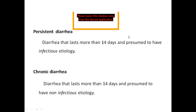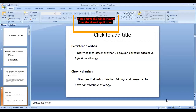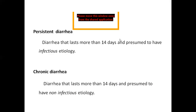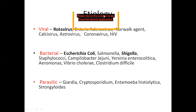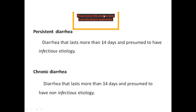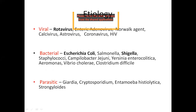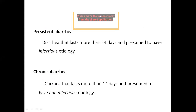Persistent diarrhea lasts more than 14 days - note this duration because it is a very important MCQ point. It is presumed to have an infectious etiology. Chronic diarrhea is also more than 14 days but has a non-infectious etiology. The most important difference between persistent and chronic is infectious versus non-infectious etiology.